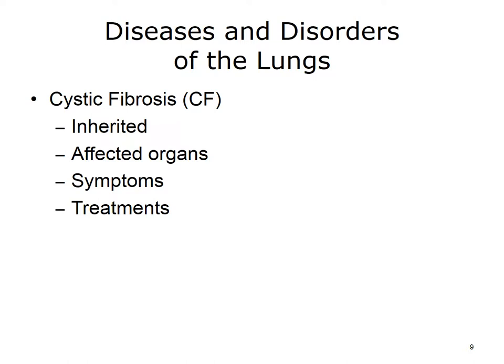Now let's look at some of the diseases of the lungs. Cystic fibrosis, or CF, is an inherited disease of the mucus and sweat glands. It affects mostly the lungs, pancreas, liver, intestines, sinuses, and sex organs. CF causes mucus to be thick and sticky. The mucus clogs the lungs, causing breathing problems and making it easier for bacteria to grow. This can lead to repeated lung infections and eventual lung damage.